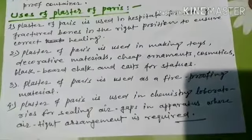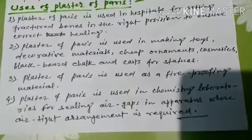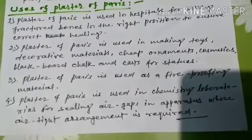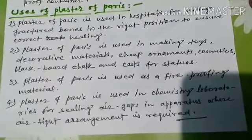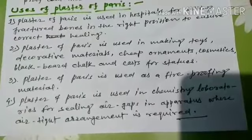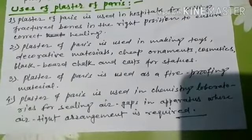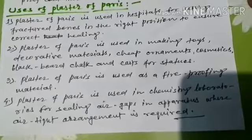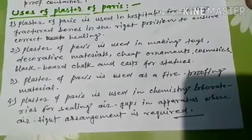Now, uses of Plaster of Paris. Plaster of Paris is used in hospitals for setting fractured bones in the right position to ensure correct healing. It is also used in making toys, decorative materials, cheap ornaments, cosmetics, blackboard chalk, and casts for statues.